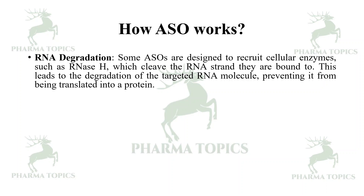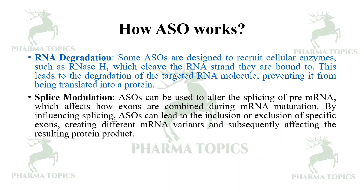The first mechanism is RNA degradation. Some antisense oligonucleotides are designed to recruit cellular enzymes such as RNase H, which cleave the RNA strand they are bound to. This leads to degradation of the targeted RNA molecule, preventing it from being translated into a protein.